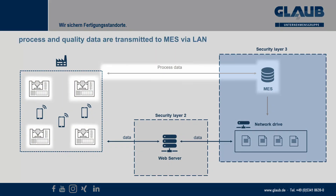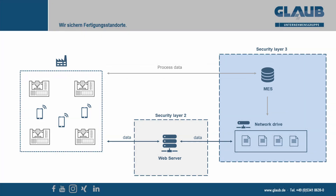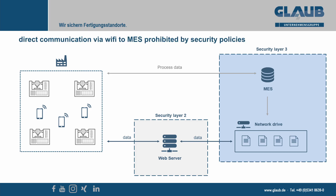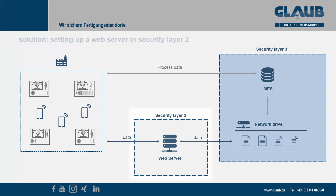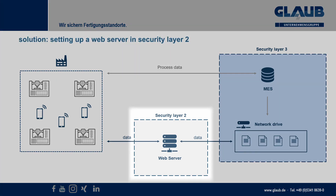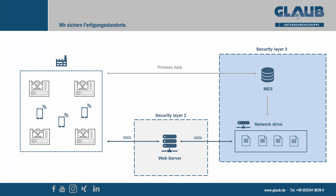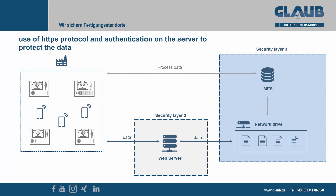The CNC machines send their process data via local area network to the MES, where the information is saved in HEX files. Because of security policies, the MES server is located in Security Layer 3, but direct communication via Wi-Fi to Security Layer 3 was prohibited. The solution was to set up a web server in Security Layer 2. The mobile app uses the HTTPS protocol to communicate with the web server and also uses authentication to verify the user's identity.